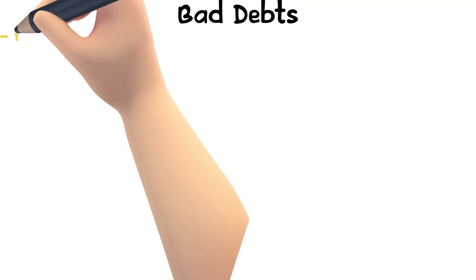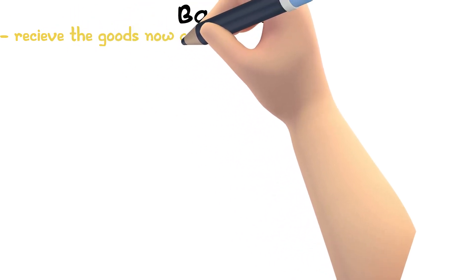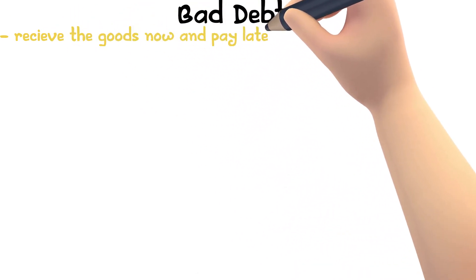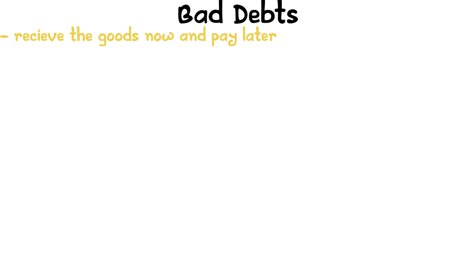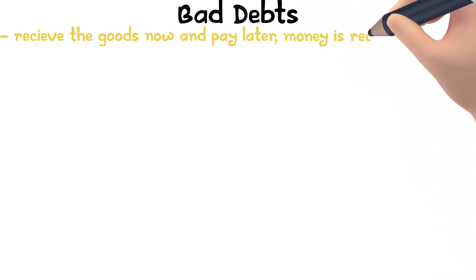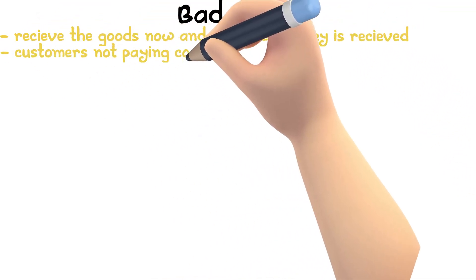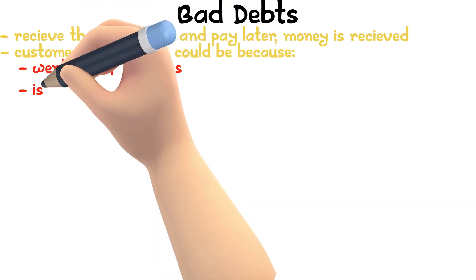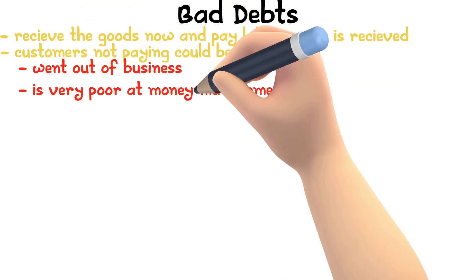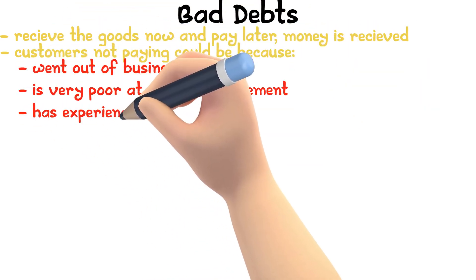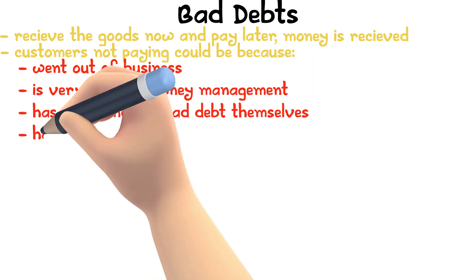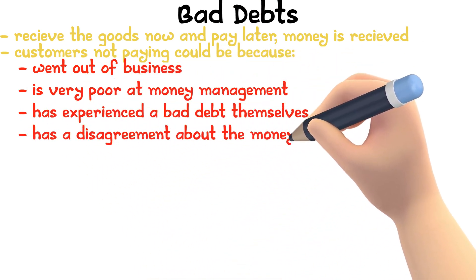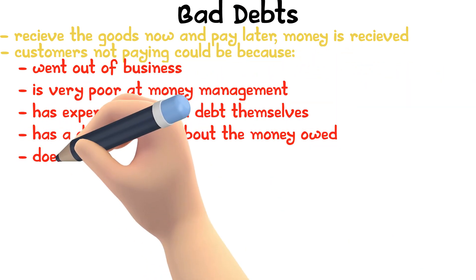When sellers give credit, customers can receive goods now and pay for them later. If customers fail to pay what they owe, it becomes a bad debt, meaning the money is never received. Customers not paying could be because the customer went out of business, is poor at money management, has experienced a bad debt themselves, has a disagreement about the money owed, or simply doesn't want to pay.